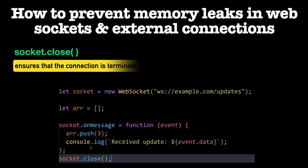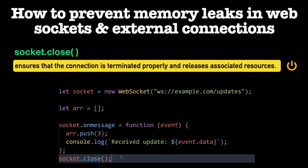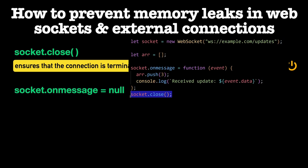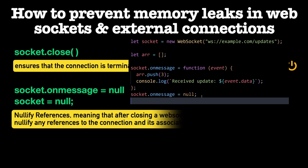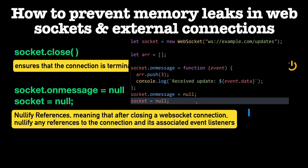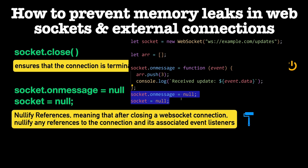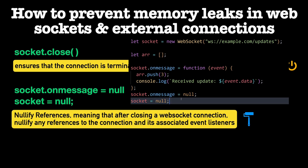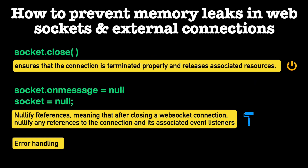To prevent memory leaks in such situations, always close WebSocket connections or other external connections using the close method when they are no longer required. This ensures the connection is terminated properly and releases associated resources. You can also nullify resources — after closing a WebSocket connection, nullify any references to the connection and its associated event listeners or callbacks. This allows the garbage collector to reclaim memory associated with these objects. You can also implement error handling to detect when a connection is lost or terminated unexpectedly, cleaning up related resources and nullifying references to prevent potential memory leaks.